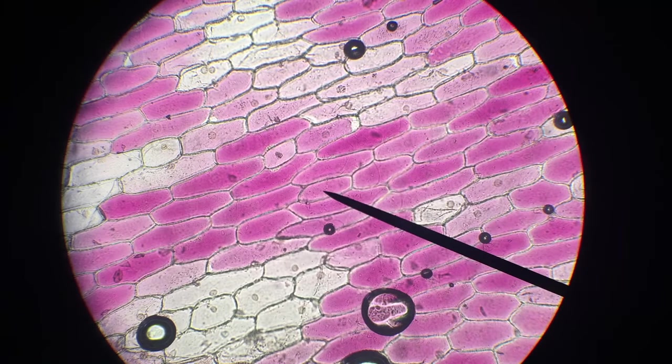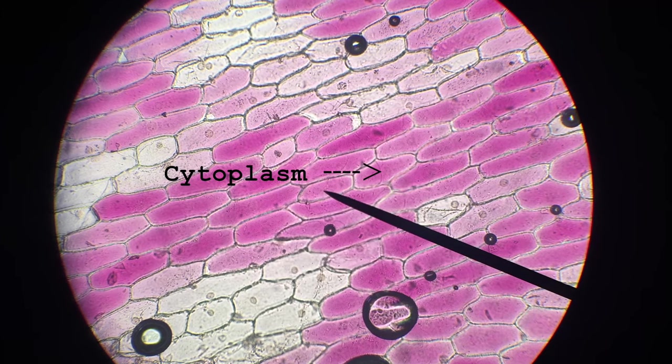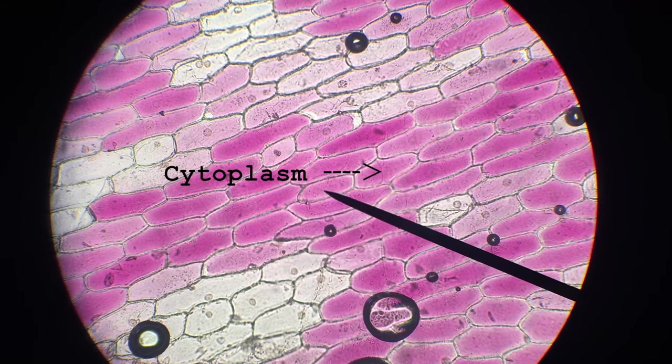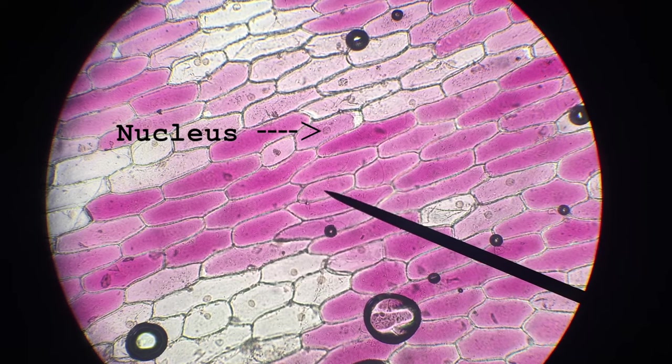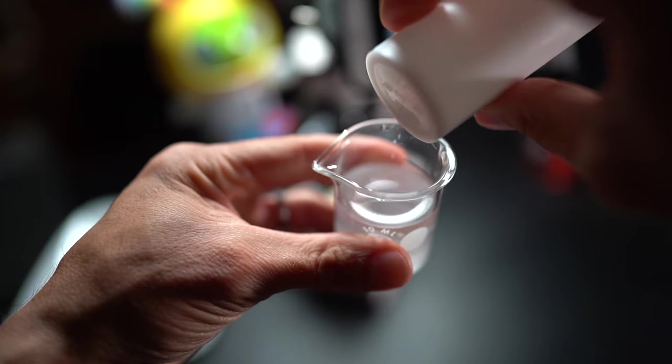Now as we look at this slide, we can see the cell wall, which is the dark outer layer. The purple section is going to be our cytoplasm, and inside there you can actually see little circles, and those circles are the nuclei that are inside that cell.